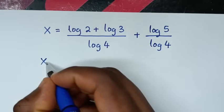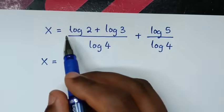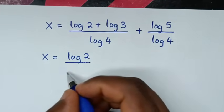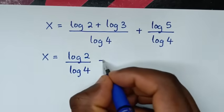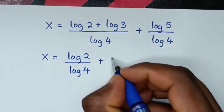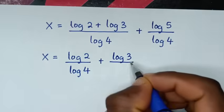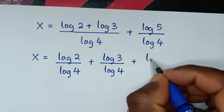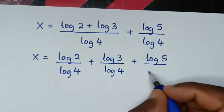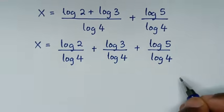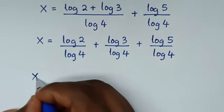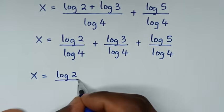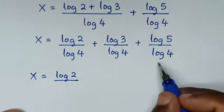Then x is equal to — we divide each term by log of 4 — so it will be log of 2 over log of 4, plus log of 3 over log of 4, plus log of 5 over log of 4.